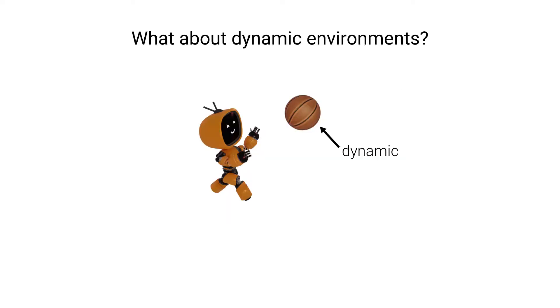But what about dynamic environments? That is, environments with dynamic elements which are, most of the time, not under the control of the agent. For example, a ball flying through the air in a game of basketball or a conveyor belt passing a robot in a factory. As it turns out, existing subgoal-based methods struggle in this setting.